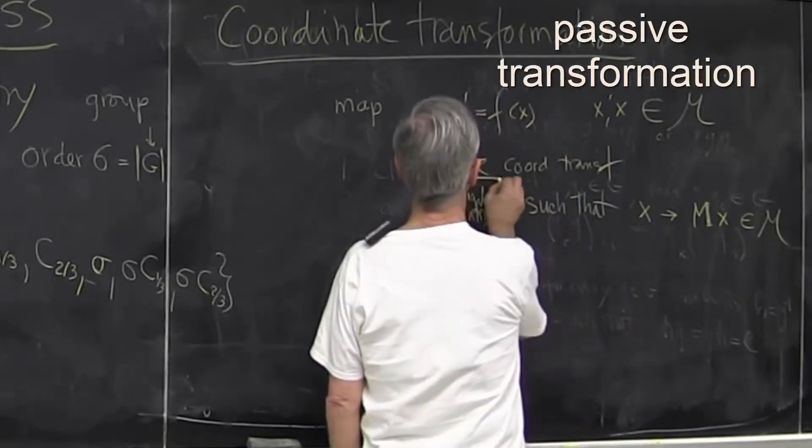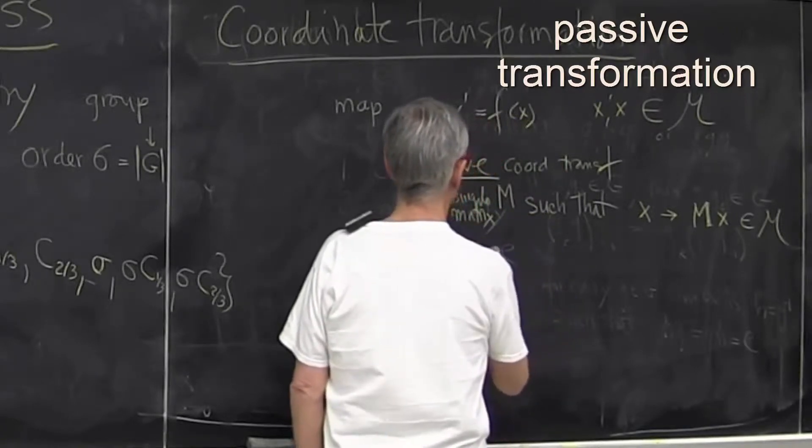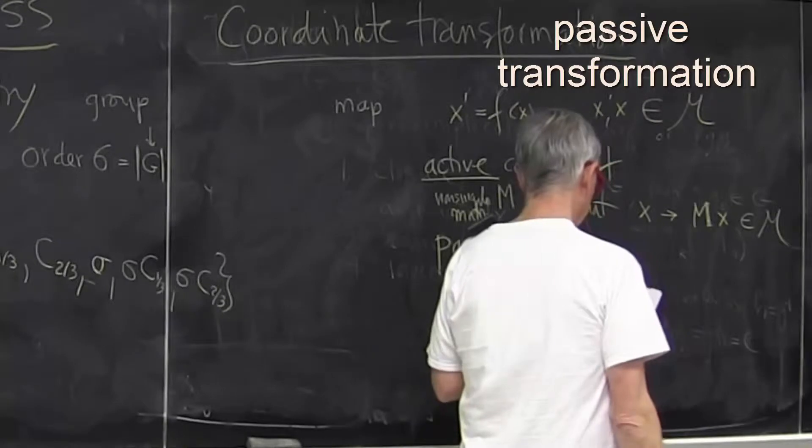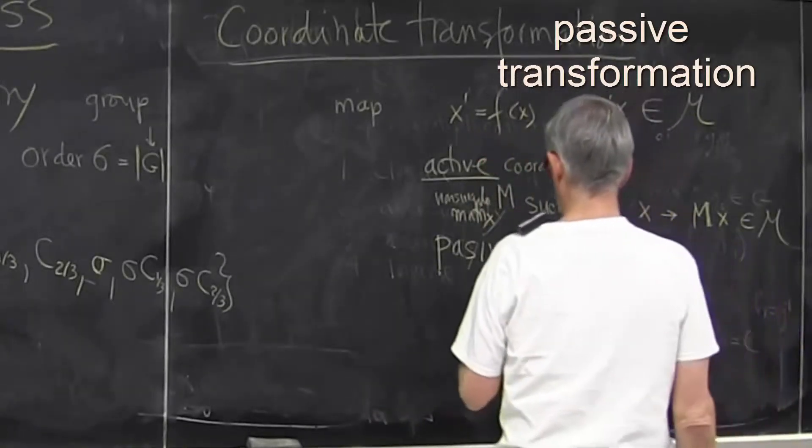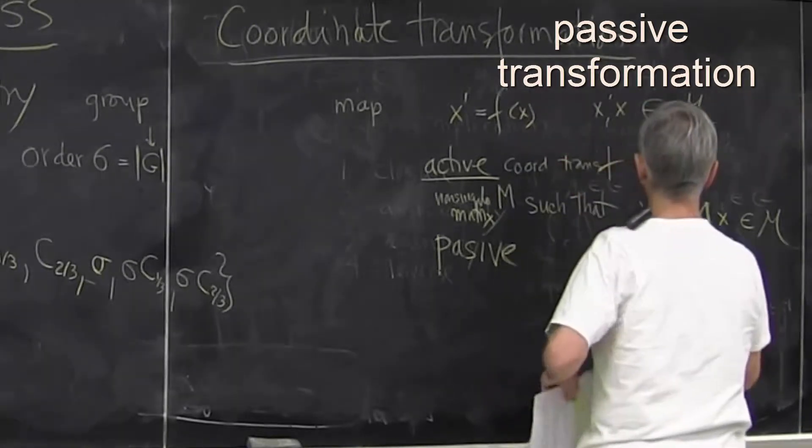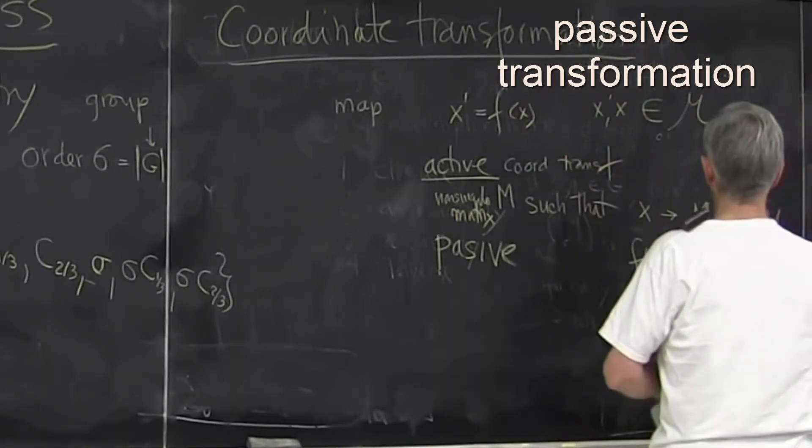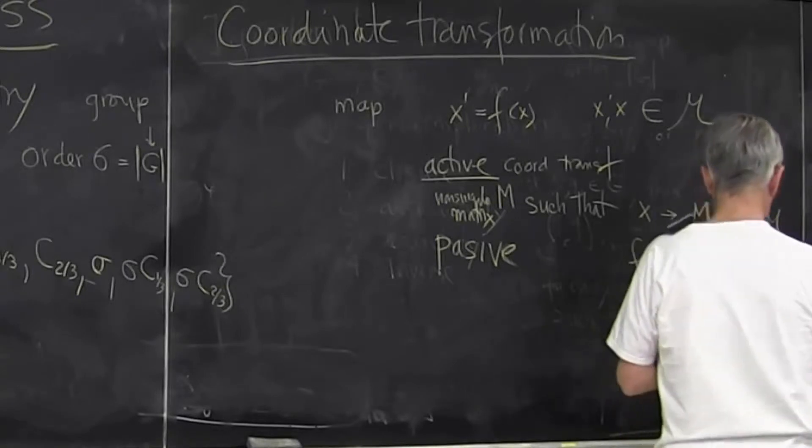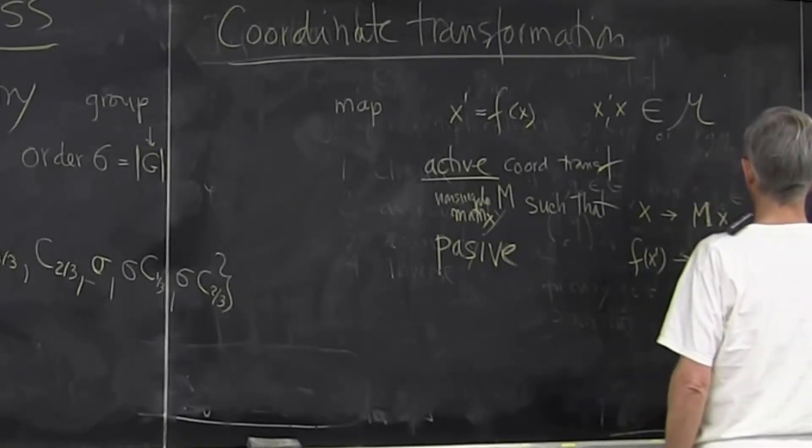A passive transformation is a transformation in which we keep the point fixed but change the coordinate system. In this case, f of x gets multiplied by the inverse of the matrix. We assume that this matrix transformation is non-singular, meaning the determinant is not zero and it's an invertible matrix.